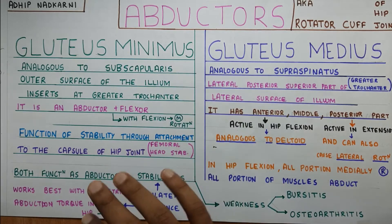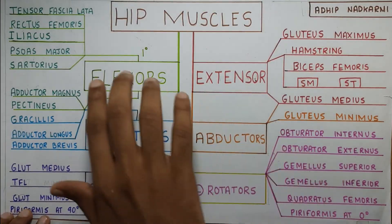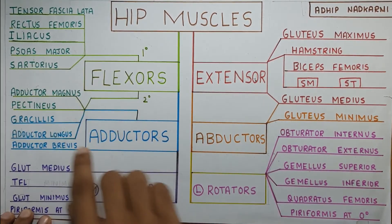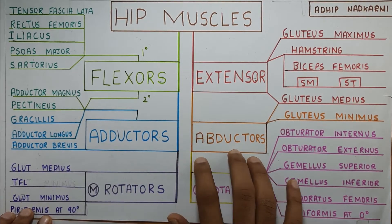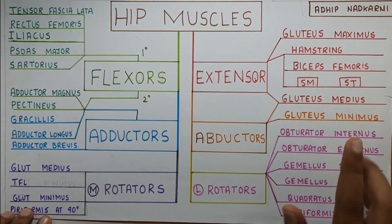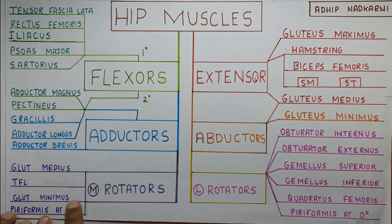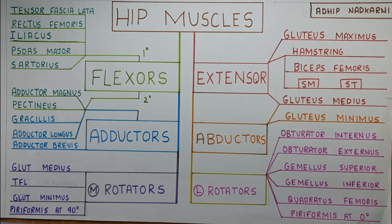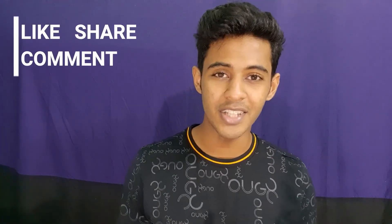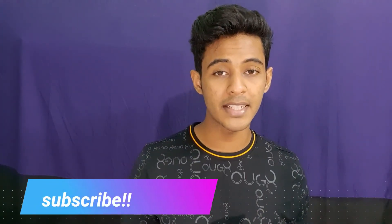Going back to the classification: we've now covered the flexors (the TRIPS mnemonic), the adductors (PG adducts), and the abductors — gluteus medius and minimus — which are also included under medial rotators. With that we finish the topic. Thank you for watching. If you like the content, share it with your friends, hit the subscribe button, like the video, and let me know in the comments what other topics you'd like me to cover.